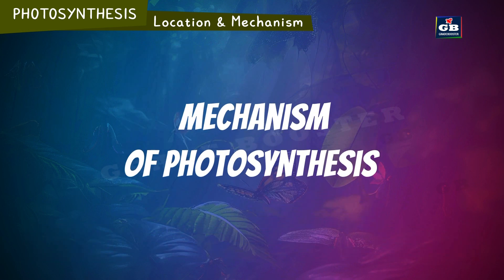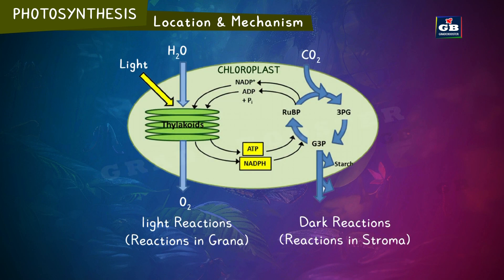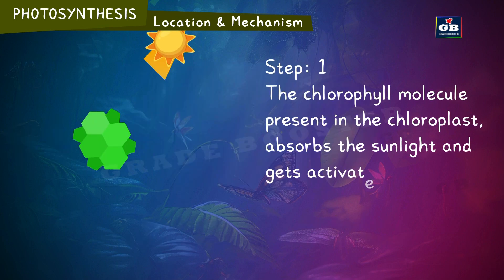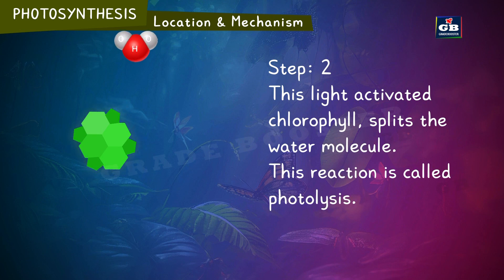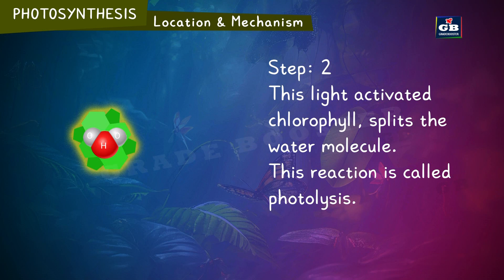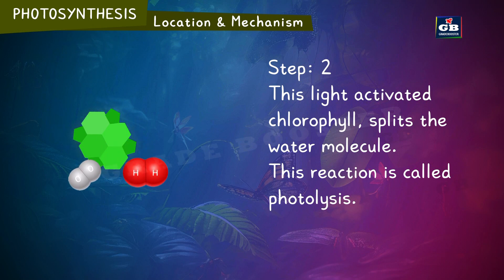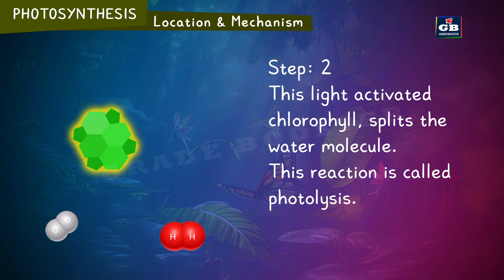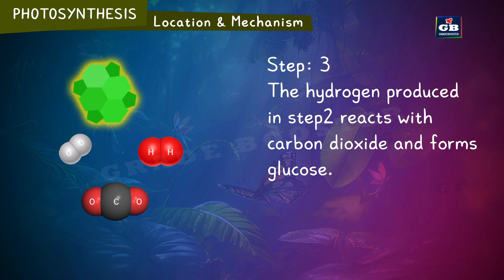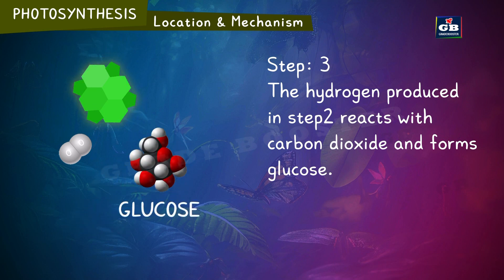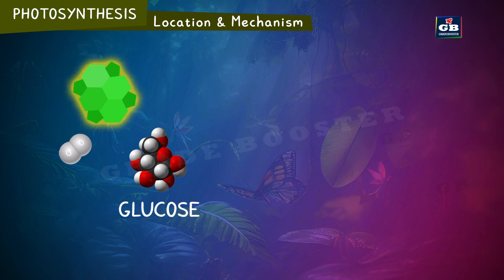Mechanism of photosynthesis in three major steps. Step 1: The chlorophyll molecule present in the chloroplast absorbs sunlight and gets activated. Step 2: The light-activated chlorophyll splits the water molecule into hydrogen and oxygen — this reaction is called photolysis. Step 3: The hydrogen produced in step 2 reacts with carbon dioxide and forms glucose. This is how glucose is made by plants.